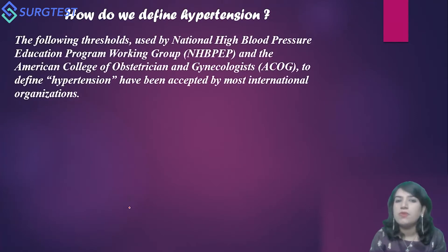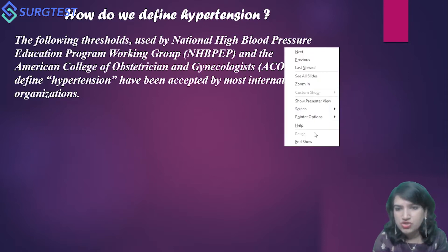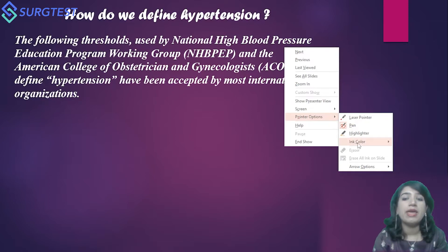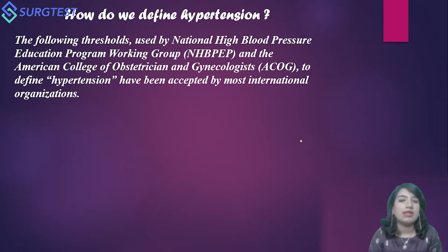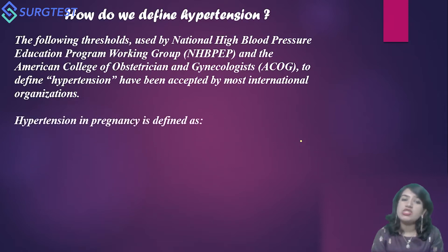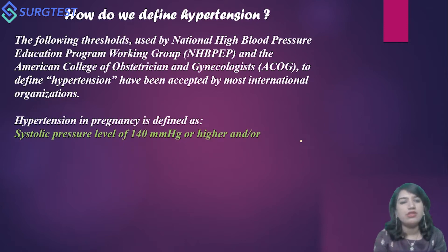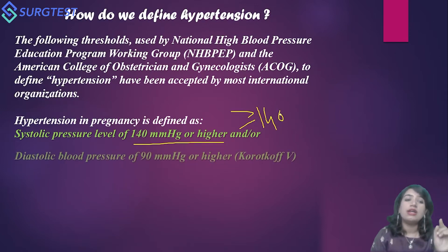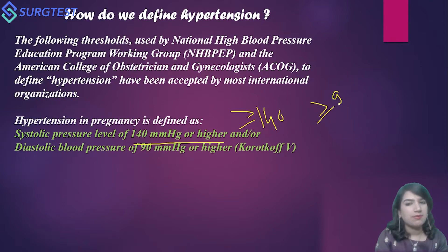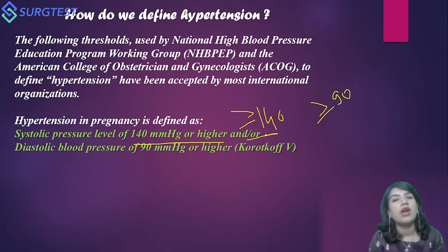The thresholds used by the NHBPEP — that is the National High Blood Pressure Education Program Working Group — and the ACOG to define hypertension have been accepted by most international organizations. Hypertension in pregnancy is defined as a systolic pressure level of 140 mmHg or higher, and/or a diastolic blood pressure of 90 mmHg or higher. An isolated rise in either systolic or diastolic also accounts for hypertension in pregnancy.